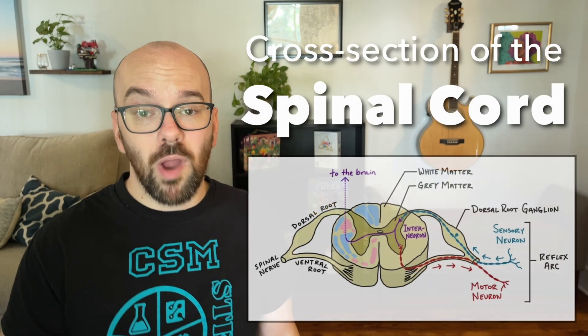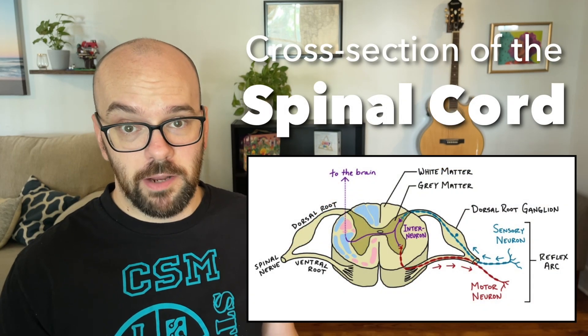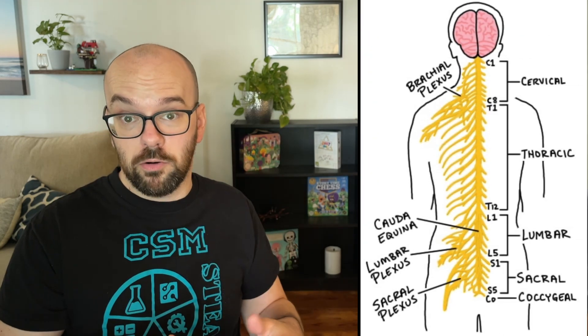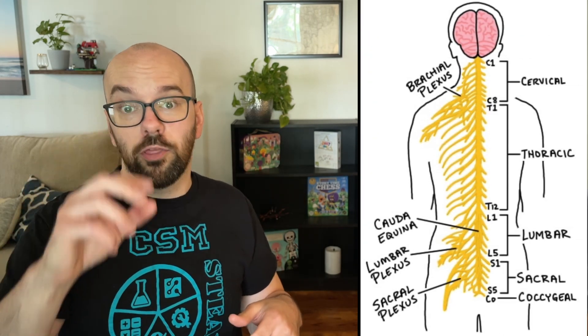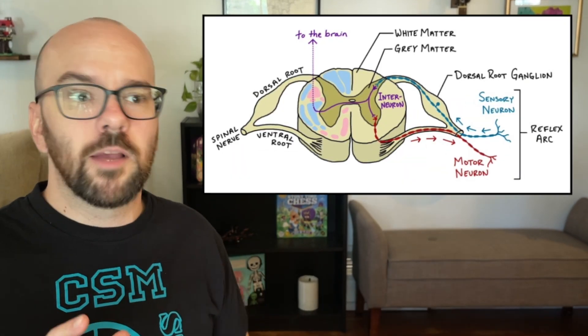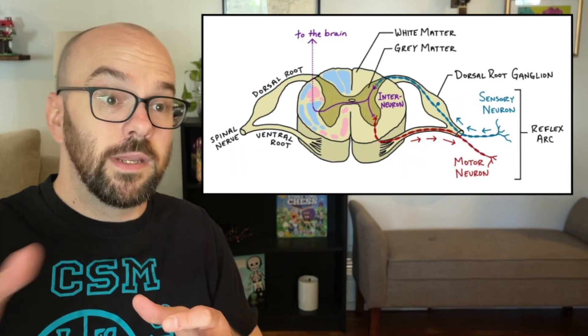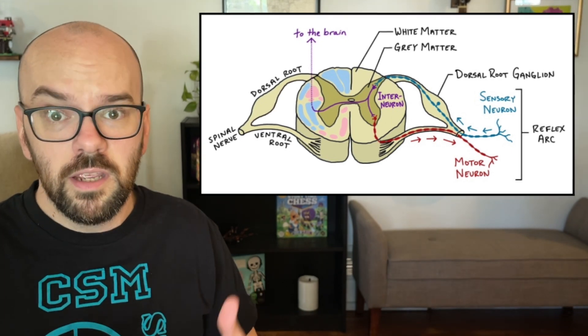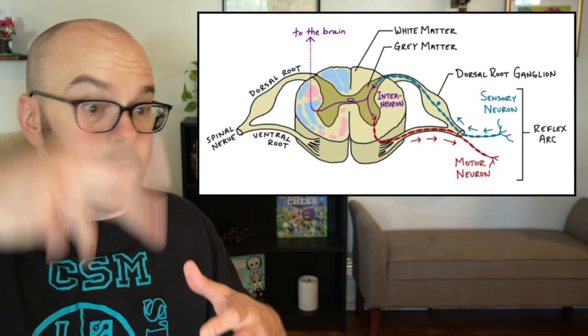In this video, we're taking a look at a cross-section of a spinal cord. In a previous video, we looked at the different regions of the spinal cord: the cervical, thoracic, lumbar, and sacral. But now we're going to zoom in on a cross-section of the spinal cord and talk about signals coming in and out, like in a reflex arc, as well as signals going up and down to the brain and back out. We're also going to take a look at some of the anatomy of the spinal cord cross-section.